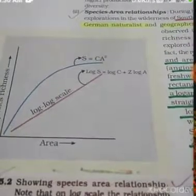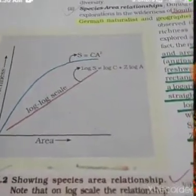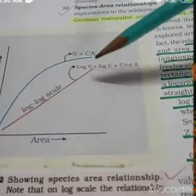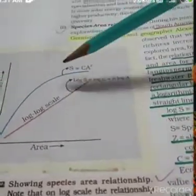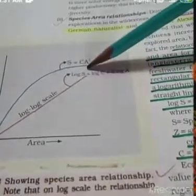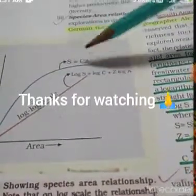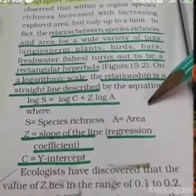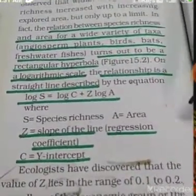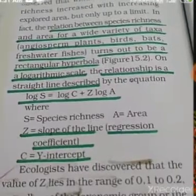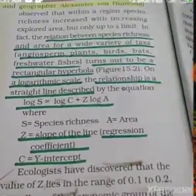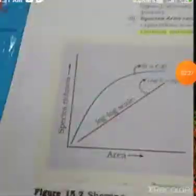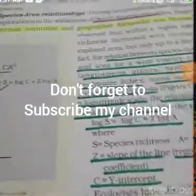The second one is representing log S = log C + Z log A. Where S is species richness, A is area, Z is the slope of the line or regression coefficient, and C is the y-intercept. The Z value ranges regardless of the taxonomic group or the region.